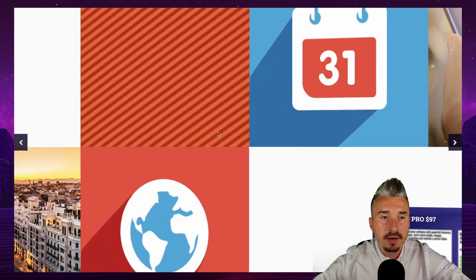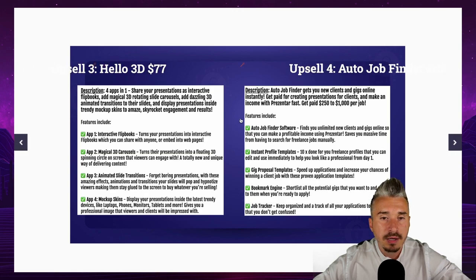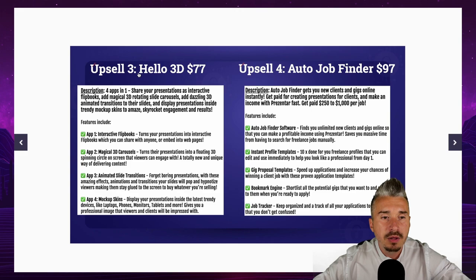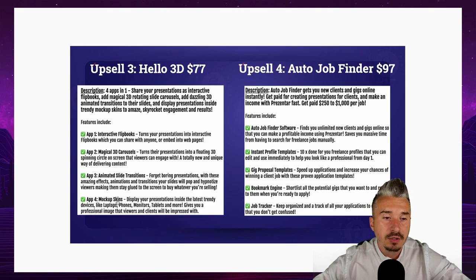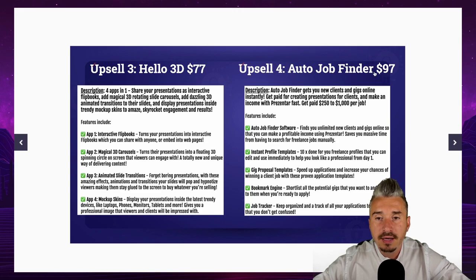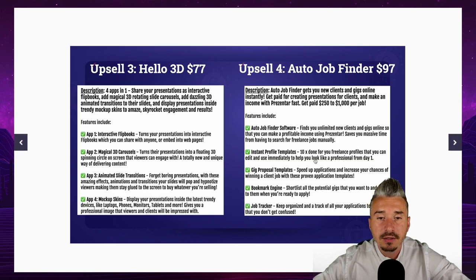Upsell number three is Halo 3D at $77, which includes four new apps: Interactive Flipbooks, Magical 3D Carousels, Animated Slide Transitions, and Mockup Skins. Upsell number four is Auto Job Finder at $97 — if you want to sell presentation services on Fiverr, Upwork, or any freelancing website, this software will help you find those jobs on these platforms.